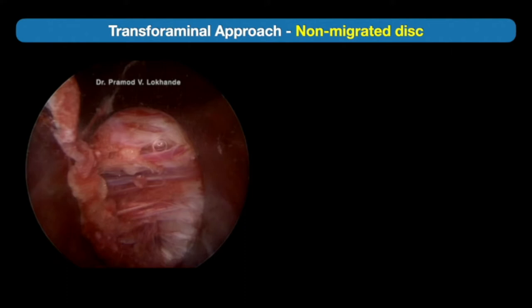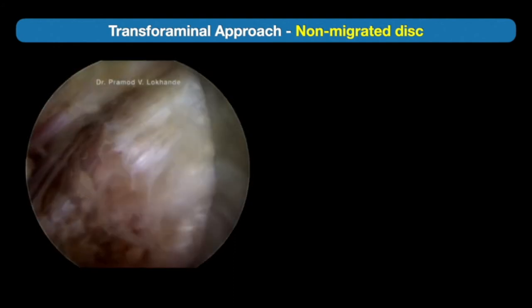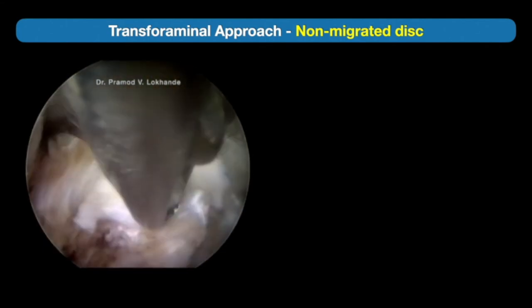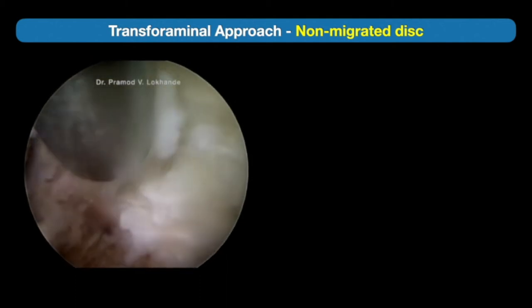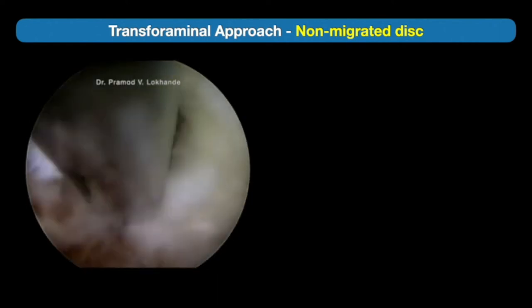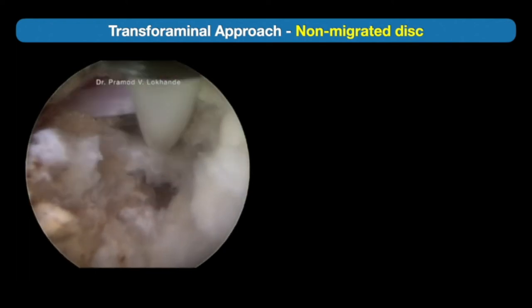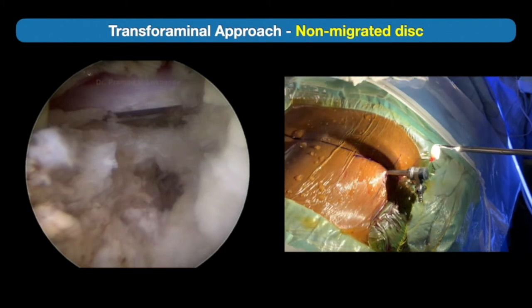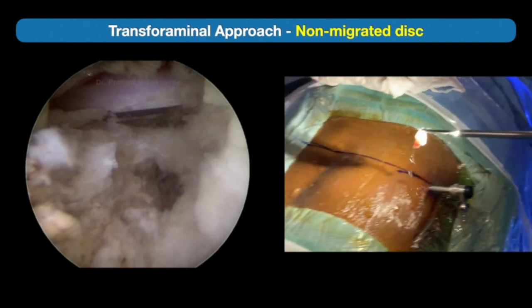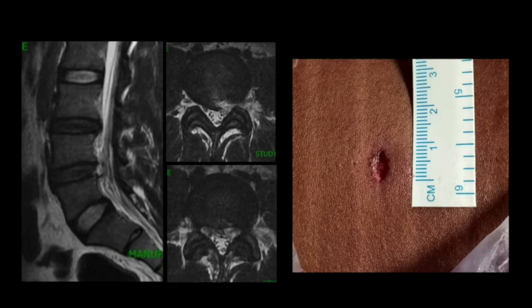Once the endoscope is inserted, we first differentiate the tissue structures with the radiofrequency probe — that's the ventral epidural space. We start cutting the posterior annulus to expose the disc herniation. That's the disc herniation, and once it is released adequately we remove it with a disc forceps. That's the ventral epidural space being probed and the well-decompressed nerve root at the top. The post-operative MRI pictures show a well-decompressed nerve root and complete removal of the disc herniation, all done through an incision less than one centimeter.